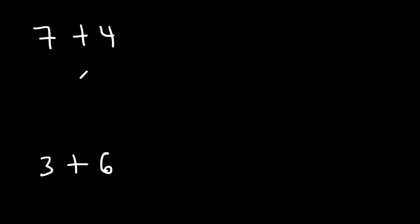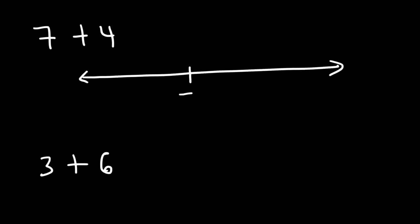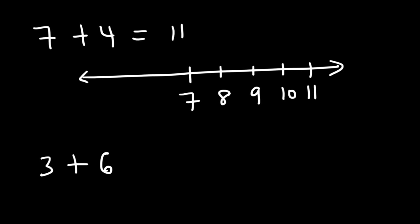So 7 plus 4 — let's start with 7 and add 4 to it. We need to travel 4 spaces to the right on our number line: 8, 9, 10, 11. So 7 plus 4 is 11.